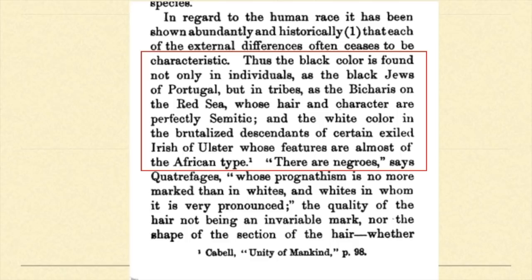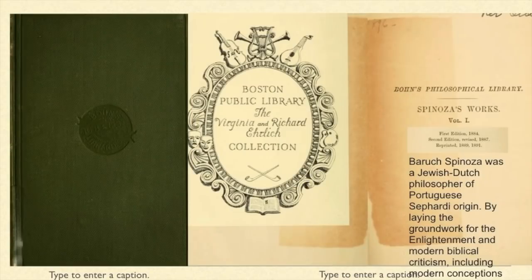Our next quote reads: 'Thus the black color is found not only in individuals, as the black Jews of Portugal, but in the tribes of the Bakaris on the Red Sea, whose hair and character are perfectly cemented.' This reference helps drive home the fact that the understanding 200 to 300 years ago was that the Portuguese Jews and Spanish Jews were and are black.